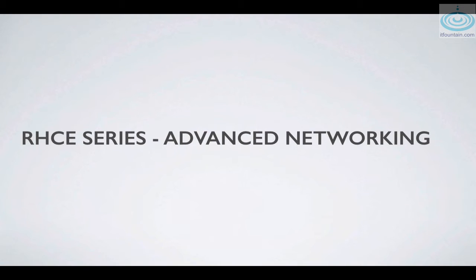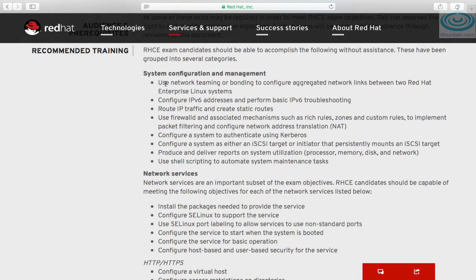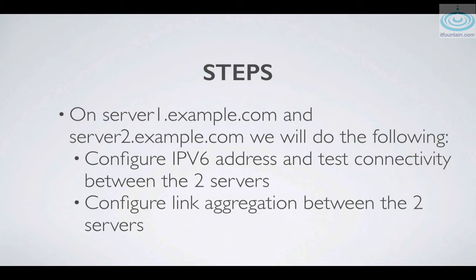Welcome to another RHCE series video. In this one we'll look at advanced networking topics. The objectives we want to cover are: use network teaming or bonding to configure aggregated network links between two Red Hat Enterprise Linux systems, configure IPv6 addresses, and perform some basic IPv6 troubleshooting. On both server1 and server2.example.com we will configure IPv6 addresses and test connectivity, and also configure a link aggregation — a network team — between the two servers.